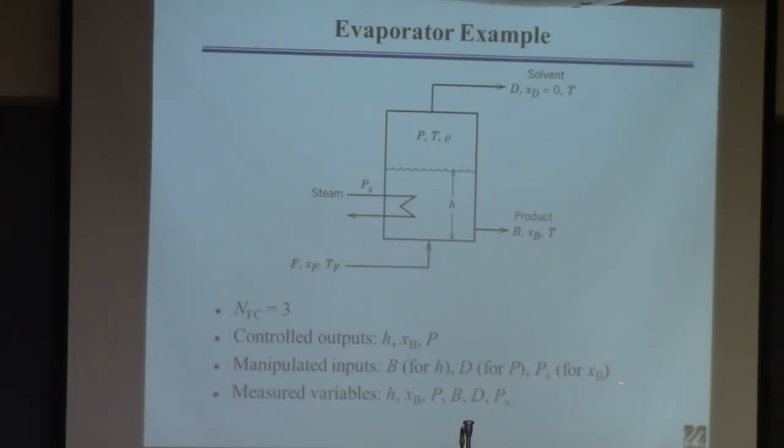Why would you control the vapor pressure? Right? That's this one here. So you would pair the flow out of the liquid flow out with the level of liquid in the tank. It makes physical sense.